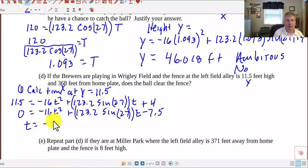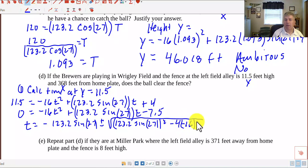So put this into my quadratic formula, negative 123.2 sine of 27. That's the opposite of B. Plus or minus the square root of B squared, which is 123.2 sine of 27, and I want to square all that minus 4 times A, which is negative 16, times C, which is negative 7.5. And be careful when you put this in your calculator. It's all over 2A or negative 32. And when I do that, I get a T value of three, I get two different T values, but my second T value is 3.356.